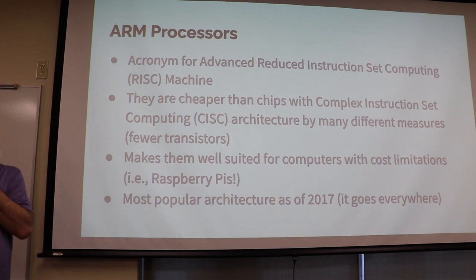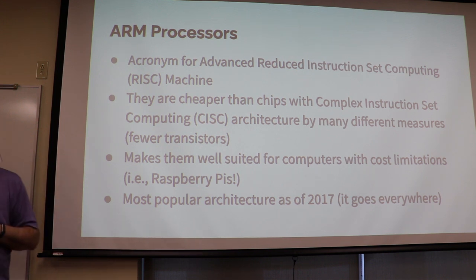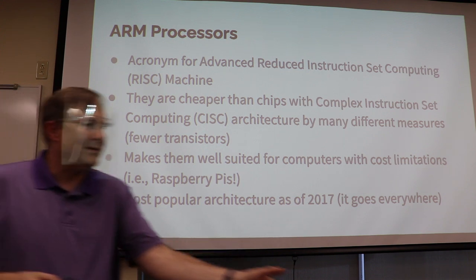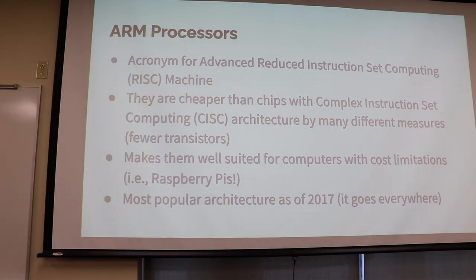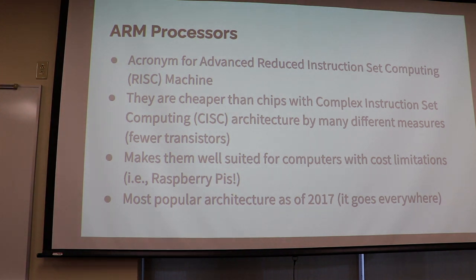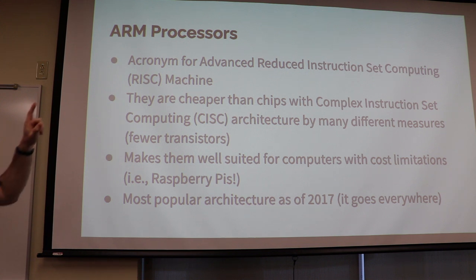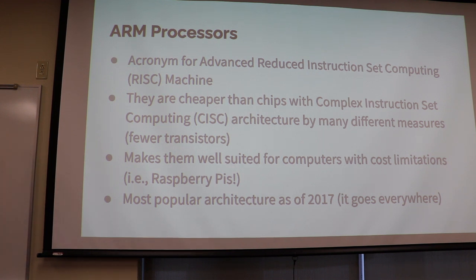What makes these go are something called ARM processors. ARM stands for Advanced RISC Machine — RISC is Reduced Instruction Set Computing. They're cheaper than chips with complex instruction set. The computers you have around here all have complex instruction set — their processors are much faster and more complex. But reduced instruction set computing allows us to do things like this: they're well suited for computers with cost limitations, like a Raspberry Pi. It's the most popular processor architecture as of about three years ago.